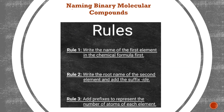So these are the rules for naming binary molecular compounds. Rule number 1: write the name of the first element in the chemical formula first. For example, you have CO2 — what's the first element here? It's carbon. So we write 'carbon' first. The first element from the left — we write its name.